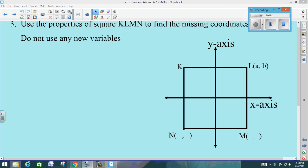We're not going to do number one on the top. We're going to start on number three, then we're going to come back to number two. Number three in the bottom right corner says use the properties of squares to find the missing coordinates, and you're not to use any new variables.